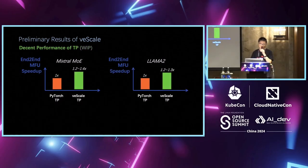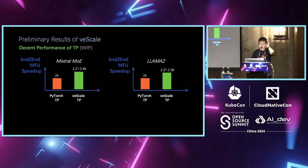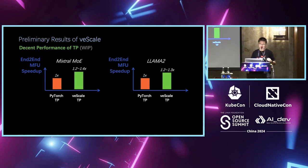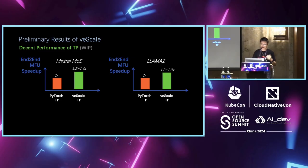For performance, we also compared against TorchTitan. For Mixtral and Llama2, we have about 20 to 30 percent improvements in MFU. We're still continuously working on improving performance — not just for open source models, but also for our business models inside TikTok.